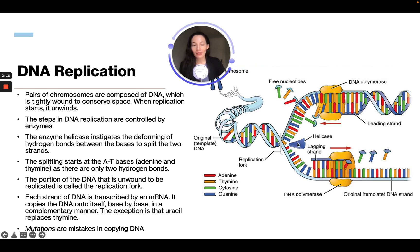The enzyme helicase instigates the breaking of hydrogen bonds between the bases to split the two strands. The splitting starts at the AT bases — adenine and thymine — as there are only two hydrogen bonds there. The portion of the DNA that is unwound to be replicated is called the replication fork, and each strand of DNA is transcribed by mRNA. It copies the DNA onto itself base by base in a complementary manner.